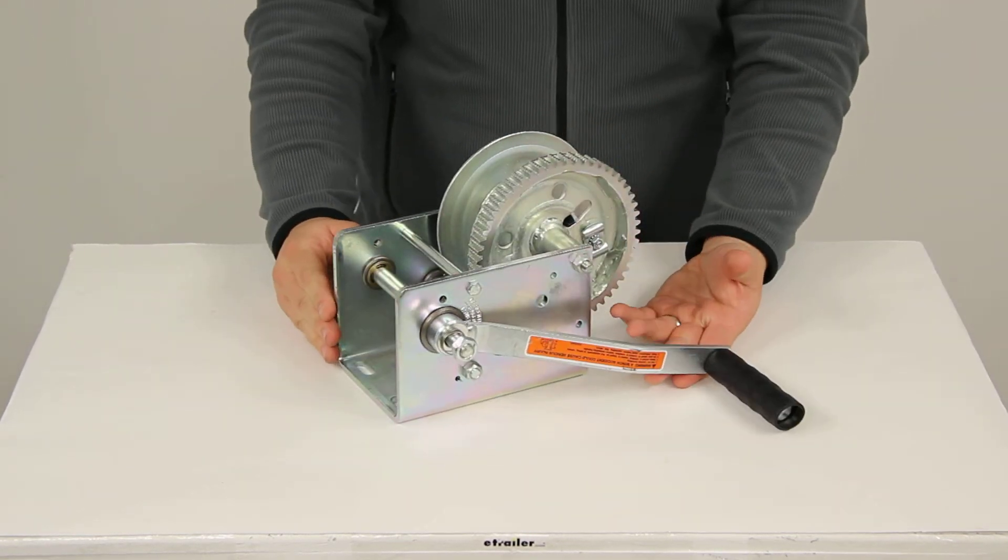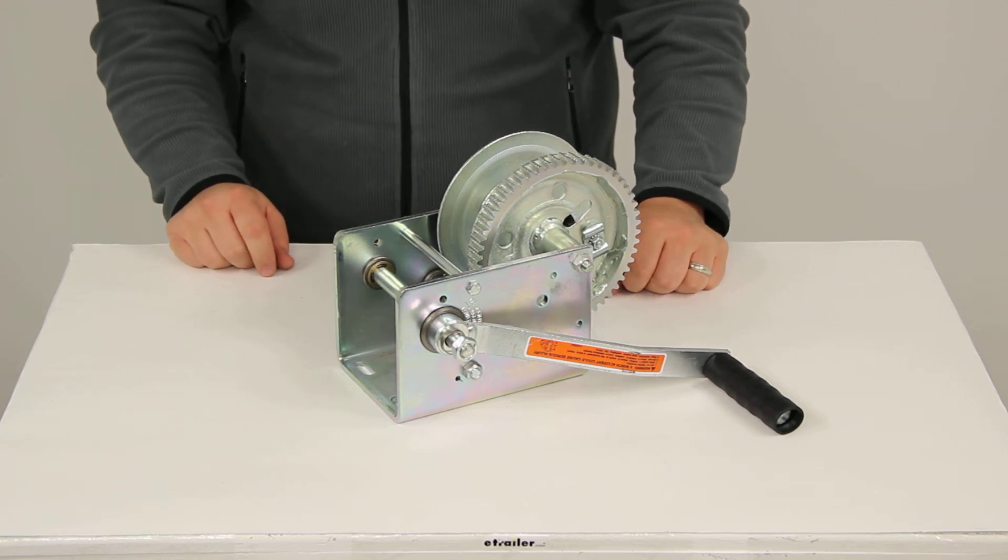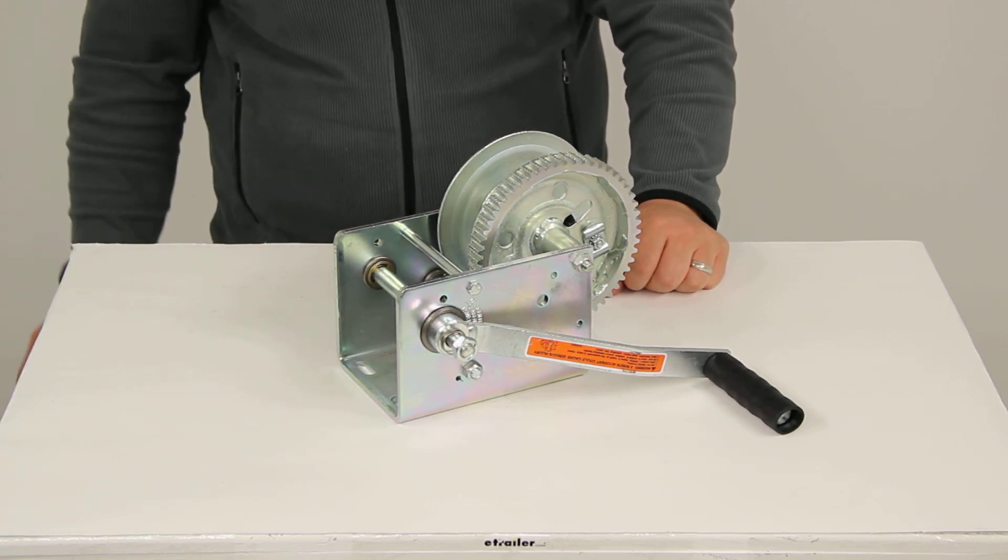And that's going to complete today's review of part number DL15721. This is the Dutton Lanson brake winch, rated at 2,500 pounds.